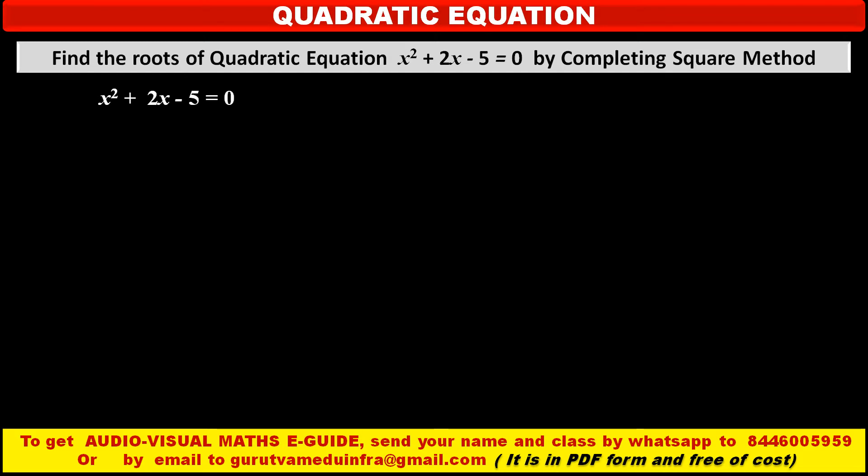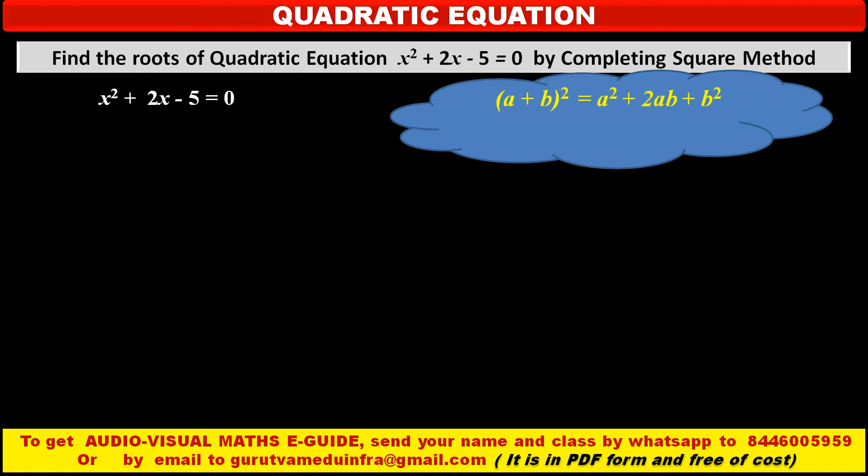Now to make it complete square in the left hand side, we have to apply one formula. (a + b)² = a² + 2ab + b². That means expansion of (a + b)² is a² + 2ab + b². Now if we rearrange this, if we change the sides, we get a² + 2ab + b² = (a + b)². So we have to apply this formula in this problem in left hand side to convert it in complete square.